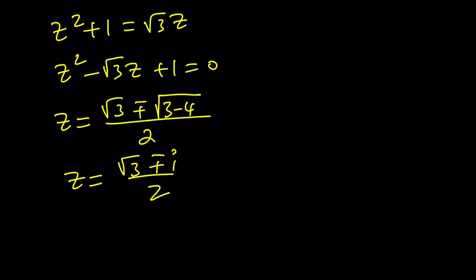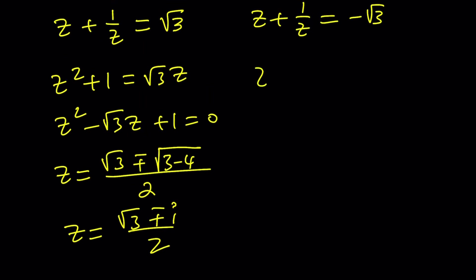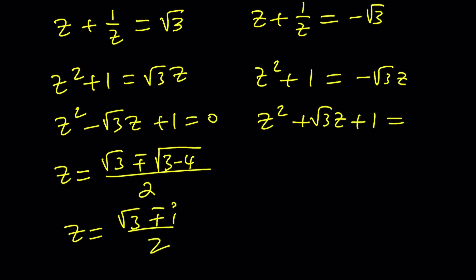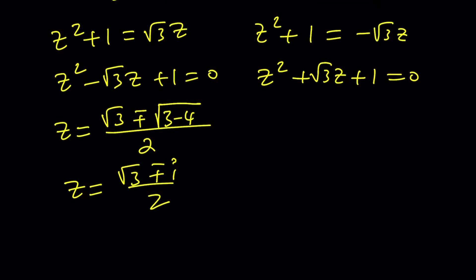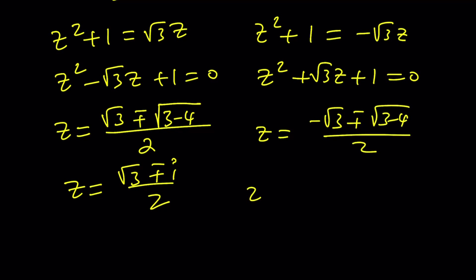Now let me handle the other case: z² + 1 = −√3·z, giving z² + √3·z + 1 = 0. From here, similarly using the quadratic formula we get (−√3 ± √(3 − 4)) / 2, which turns into (−√3 ± i) / 2. So all solutions are non-real.